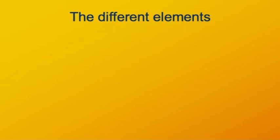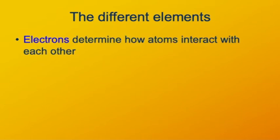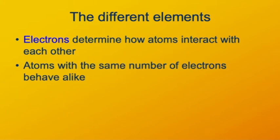The deciding difference between atoms is the number of electrons. Electrons compose the outer parts of atoms, so it makes sense that they're what interacts with other atoms. The social behavior of an atom depends on how many electrons it has.